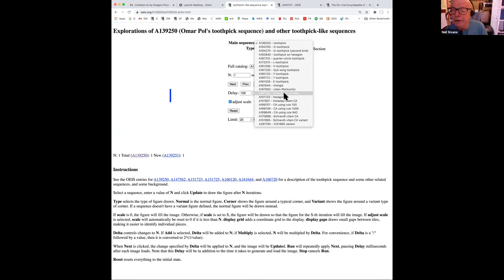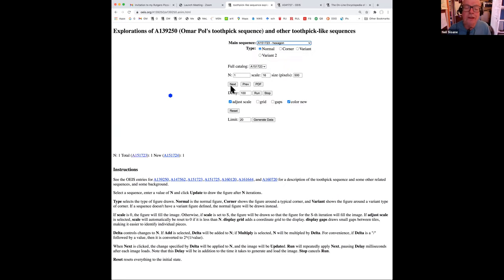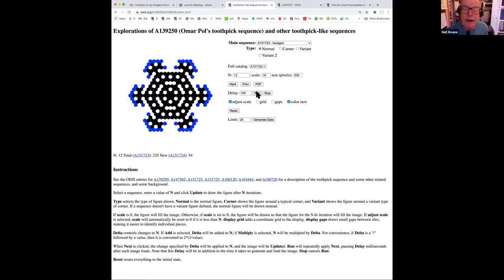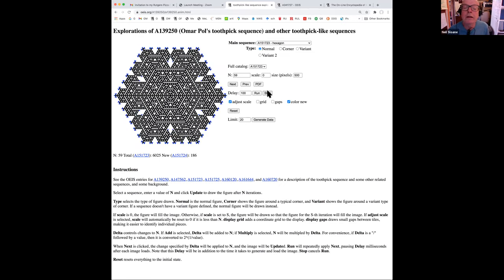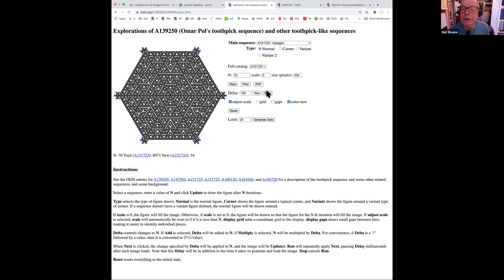That was the Ulam Warburton cellular automaton. If we change the rules and make the grid hexagonal, we're looking at what you might see on a bathroom floor tiled with hexagonal tiles. One hexagon gets infected and it infects its neighbors, and again you get infected if exactly one of your neighbors is infected. The numbers are different this time.